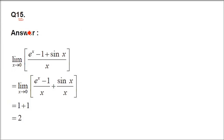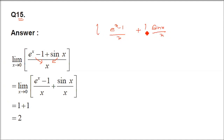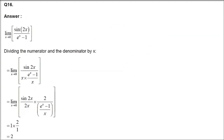Question 15: limit x→0 of (eˣ - 1 + sin x)/x. Separate as (eˣ-1)/x + sin(x)/x. Applying limit: (eˣ-1)/x → 1 and sin(x)/x → 1. So 1 + 1 = 2 is the answer.